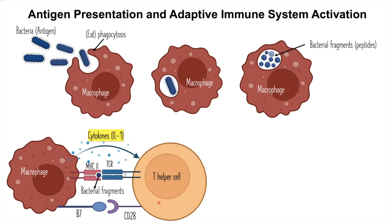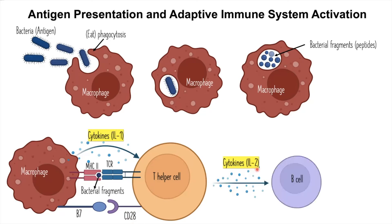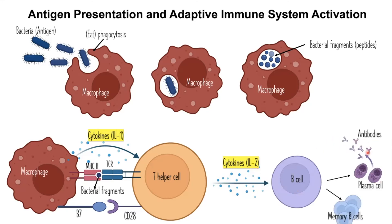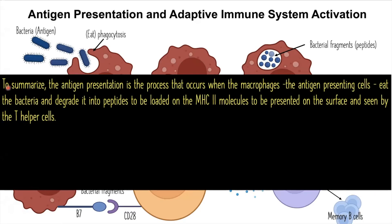The T-helper cell will secrete a cytokine called interleukin-2. This cytokine will induce the B-cells to produce plasma cells that produce antibodies, and also produce memory B-cells that will remember this type of infection in the future.